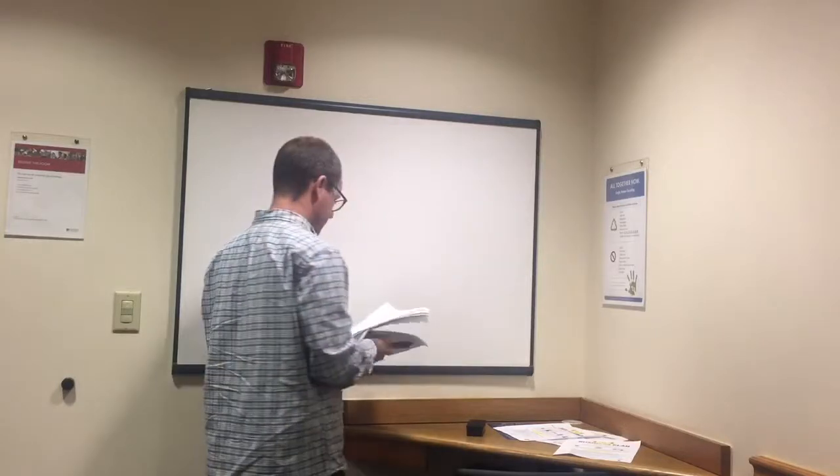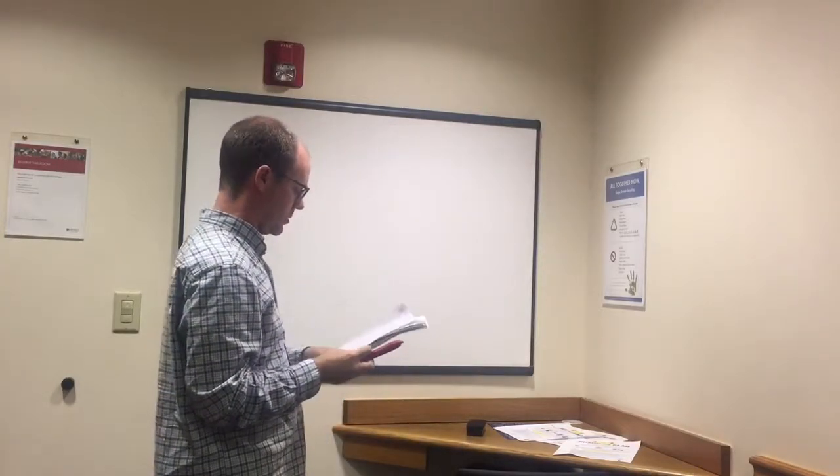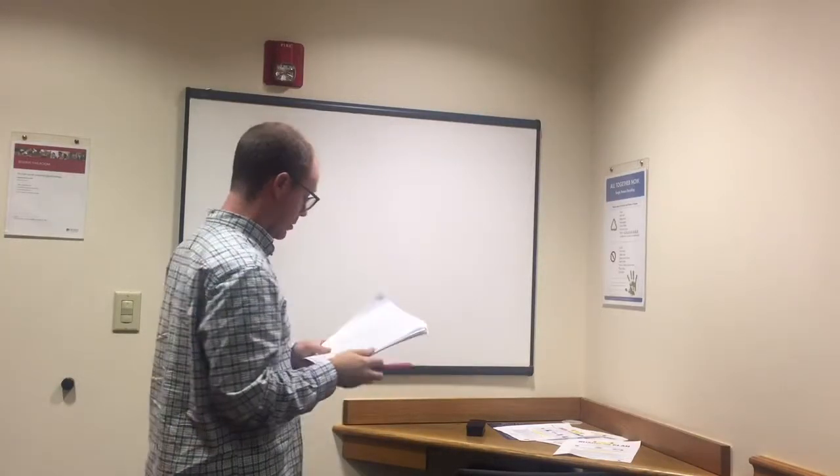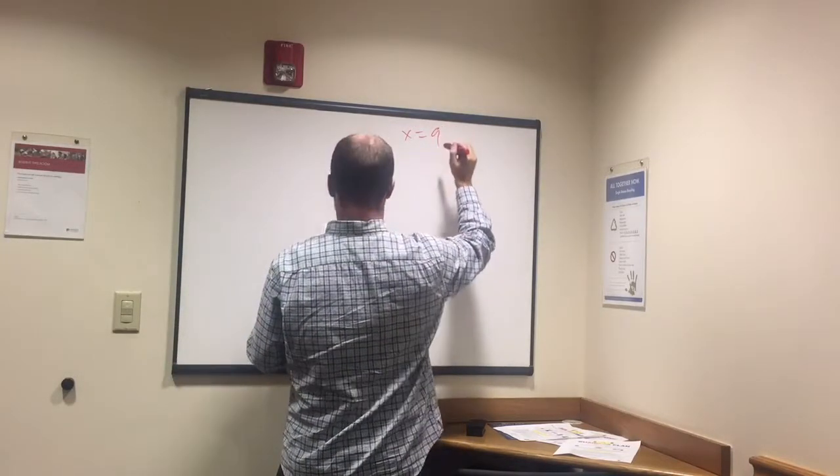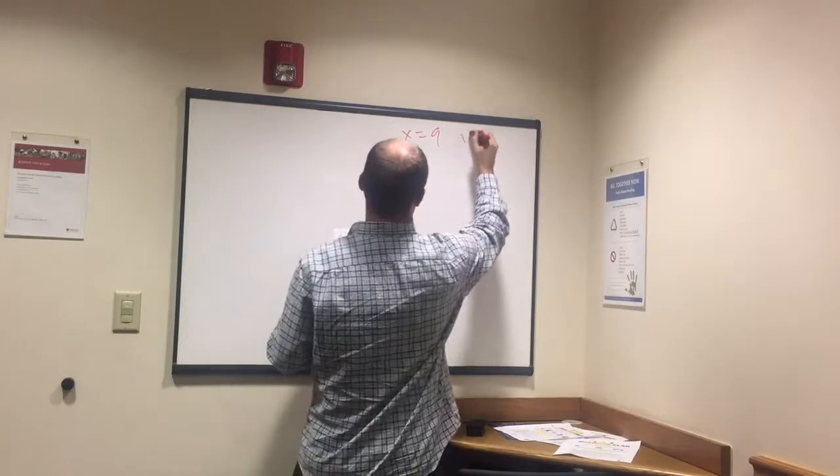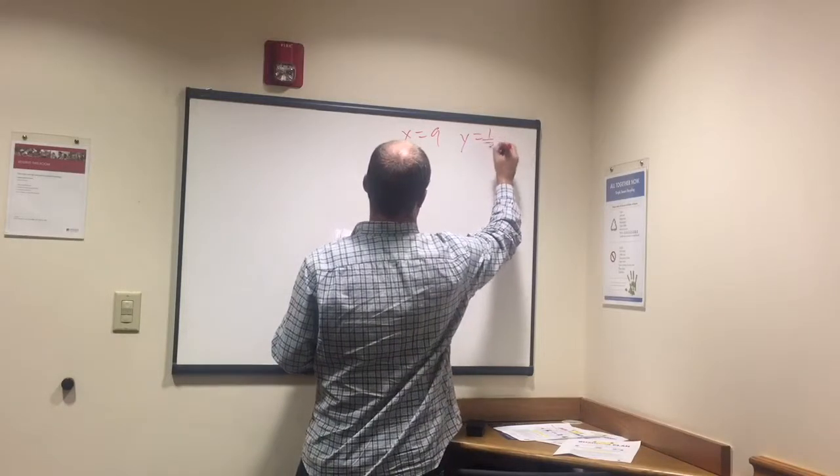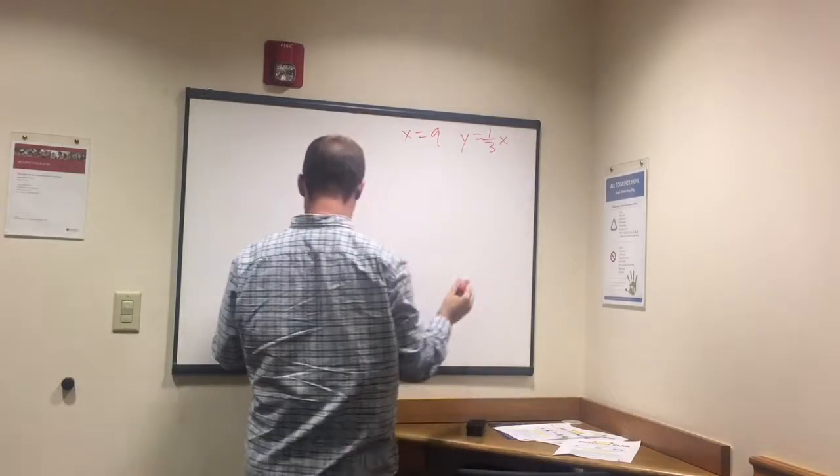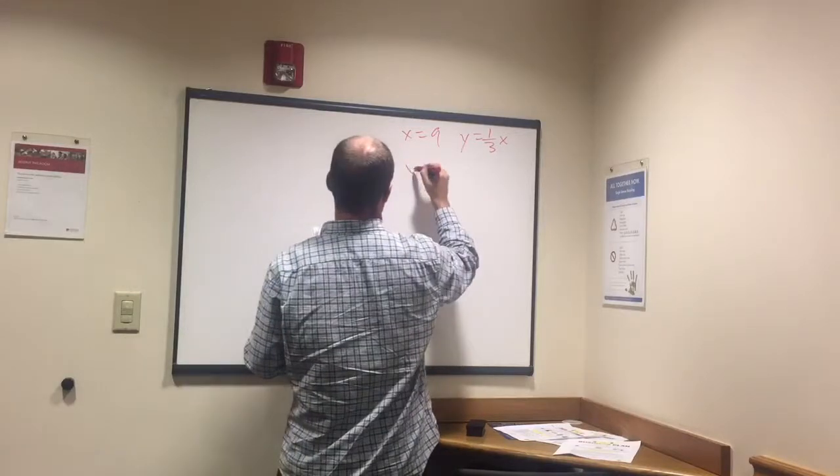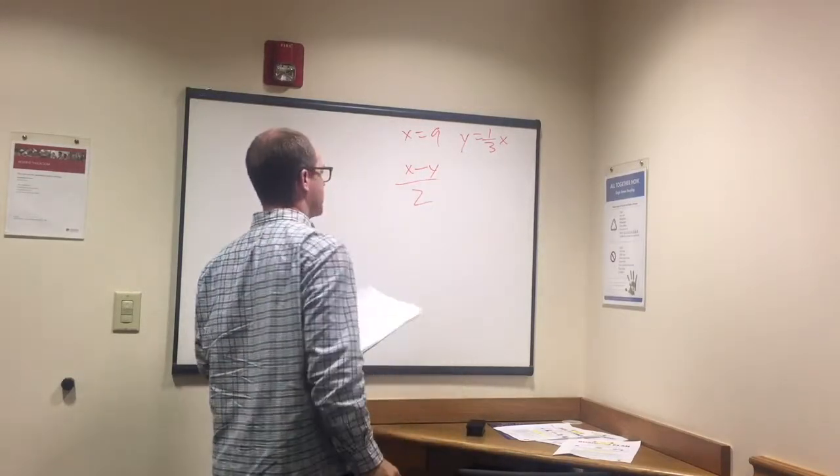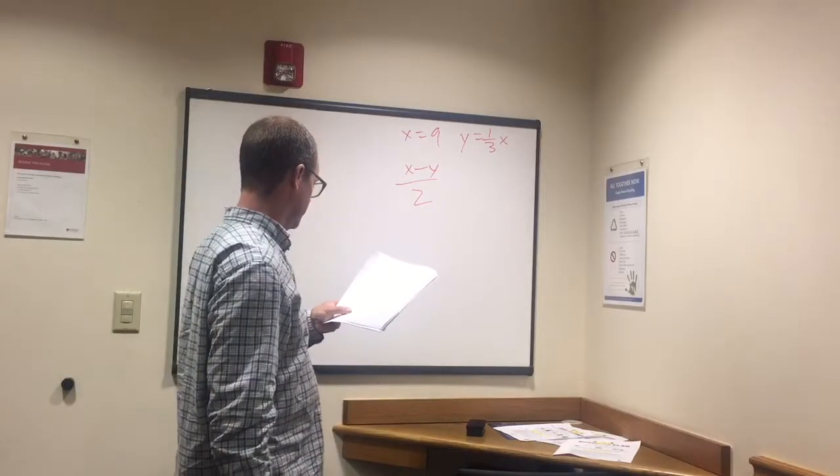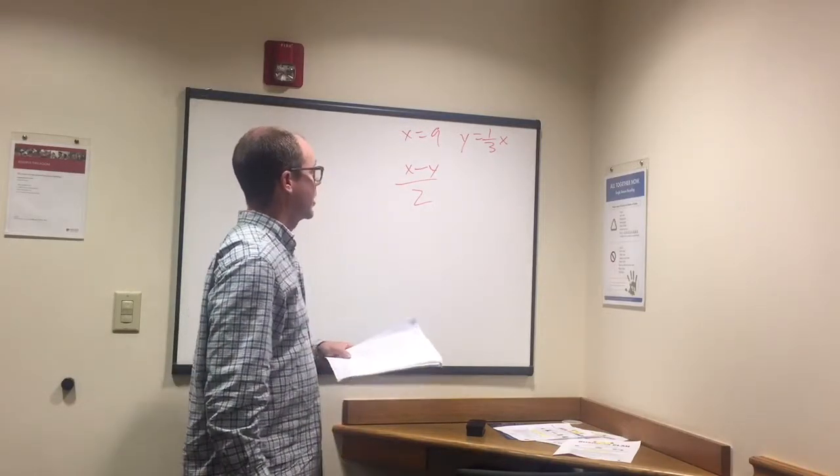1 left. Alright, this one's a little more complicated to plug in, but we can do it. X equals 9, Y equals 1 third x, and you want to know x minus y over 2.